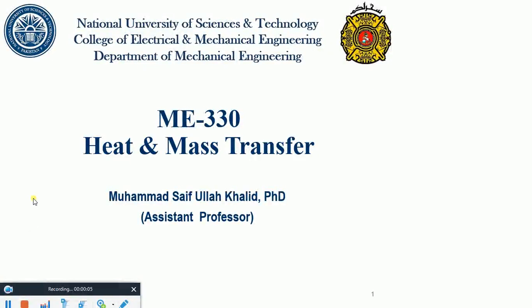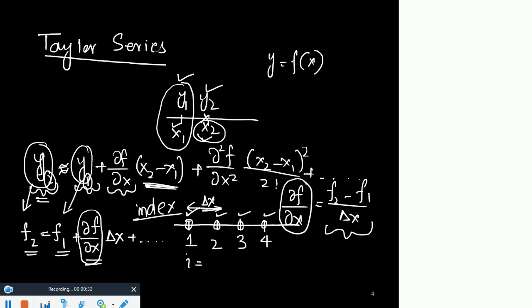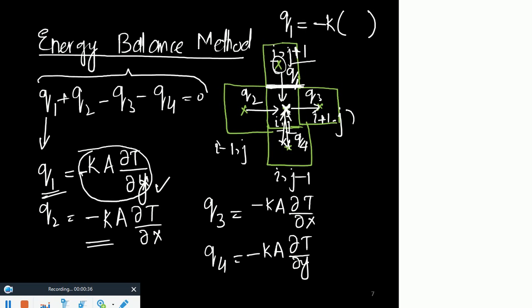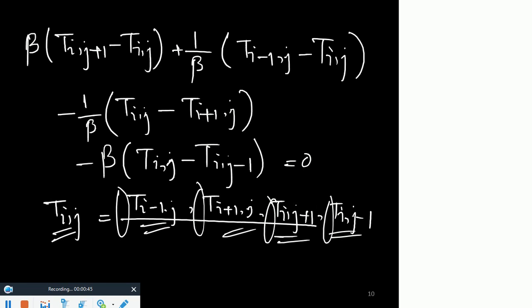We were discussing numerical techniques for 2D steady-state conduction problems. We discretized a two-dimensional surface and I told you there is something known as the finite difference equation where you approximate the gradients by Taylor series. I have gone through this formulation and arrived at the energy balance method. Let me complete this formulation and then move on to a case study.